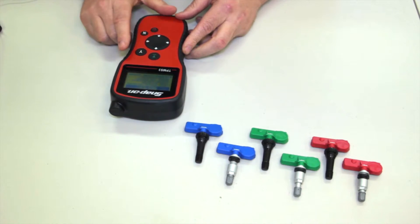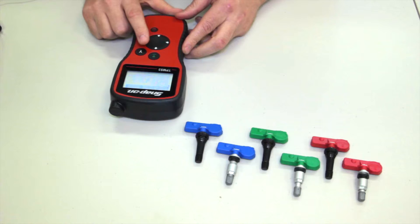Power the tool up, select program sensor, scroll to the quick sensor.